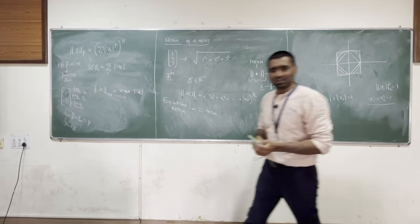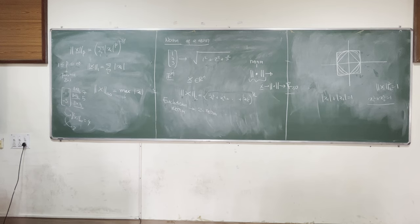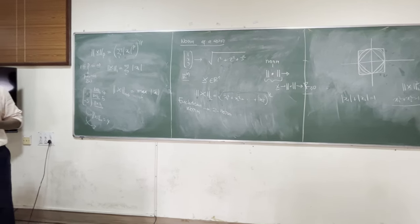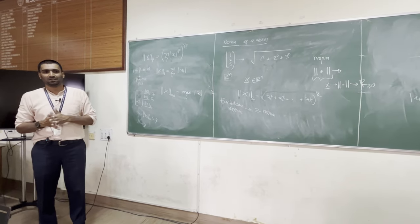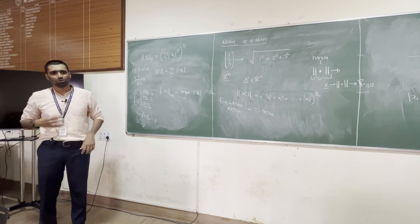We'll stop here. If there are any questions we'll discuss them. There is a lot to unpack, but all of this is absolutely vital to move forward. Please make sure you go and revise this, because once we move to matrices, I will assume you know what linear independence is, what subspaces are, and just move on.